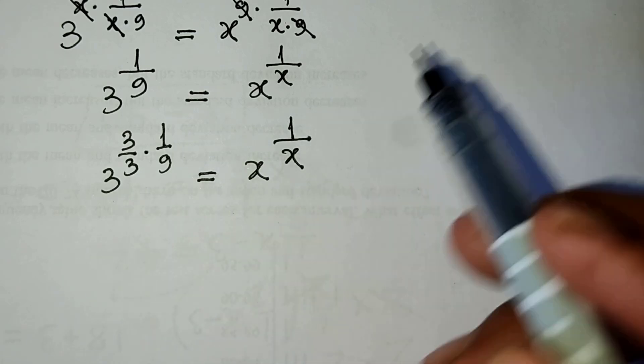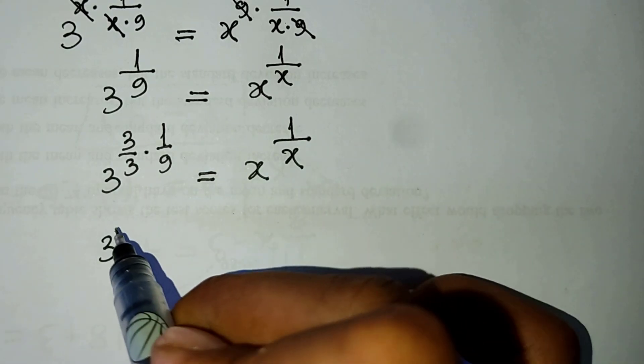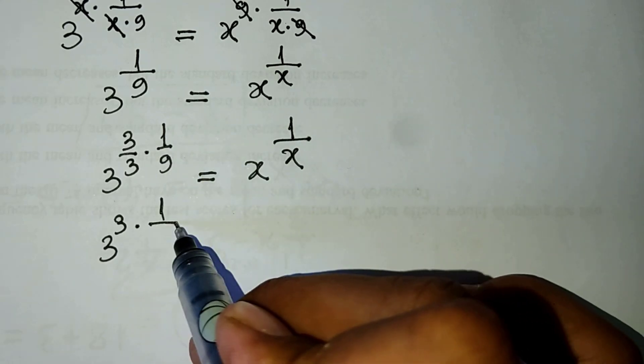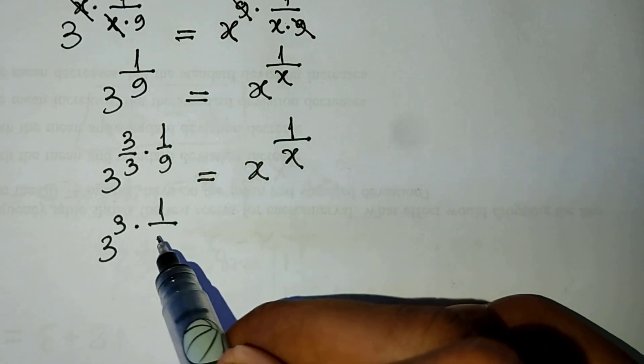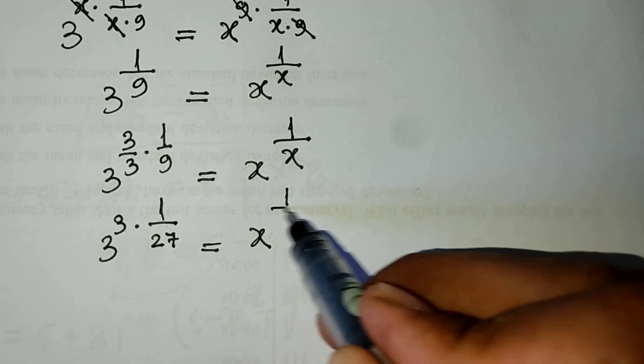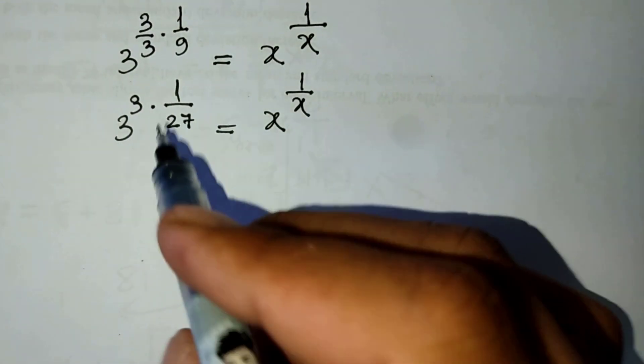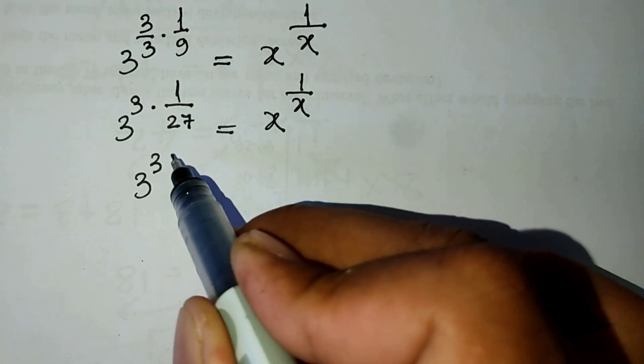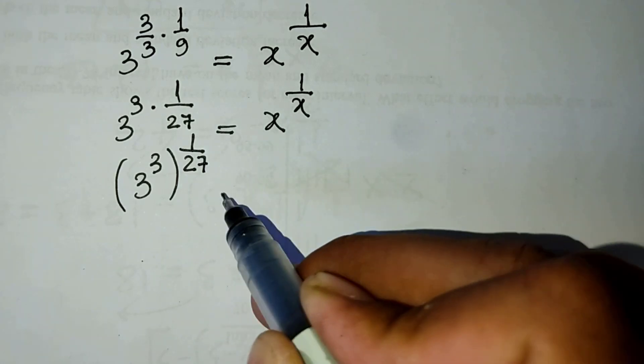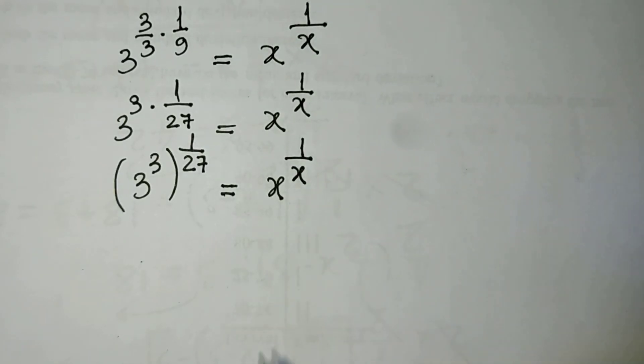Now, here is 1 divided by 9 times 1 divided by 3. We write 3 power 3 or power 1 divided by 27 equal to x power 1 divided by x.